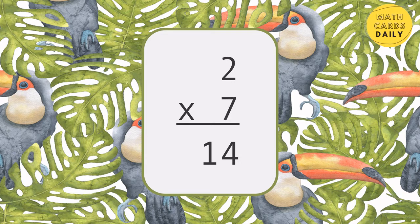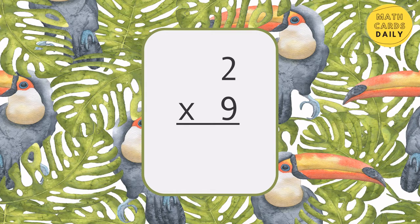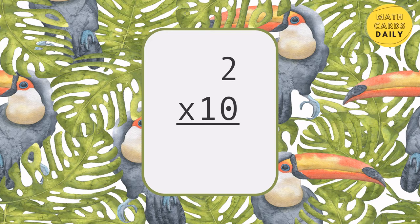2 x 7 is equal to 14. 2 x 8 is equal to 16. 2 x 9 is equal to 18. 2 x 10 is equal to 20.